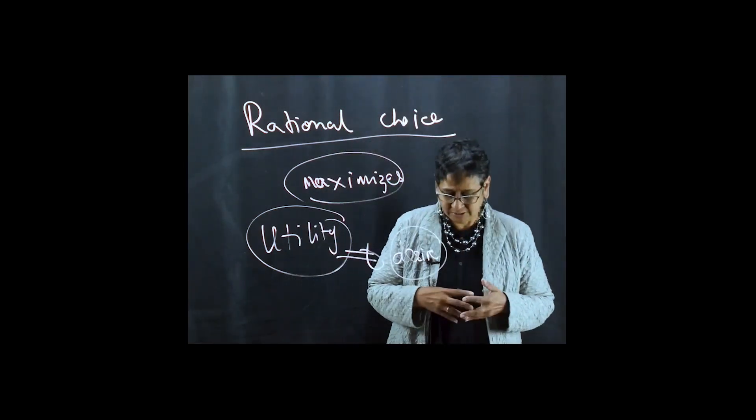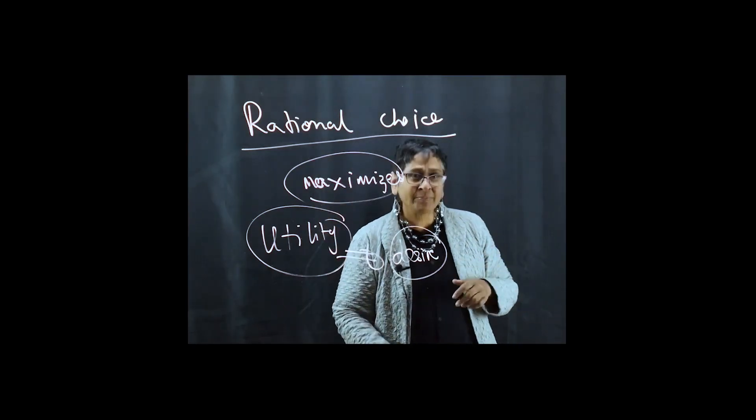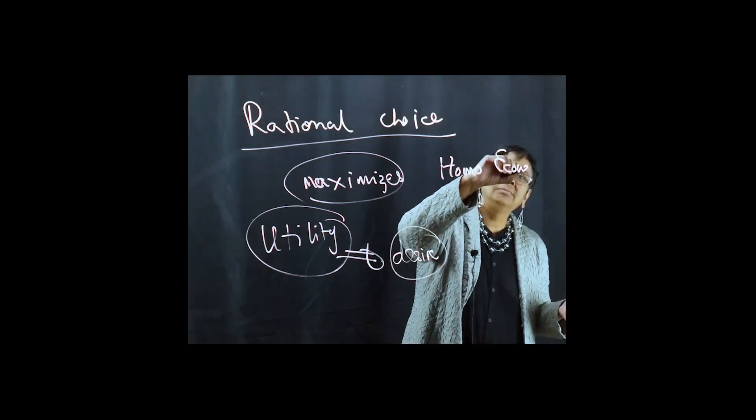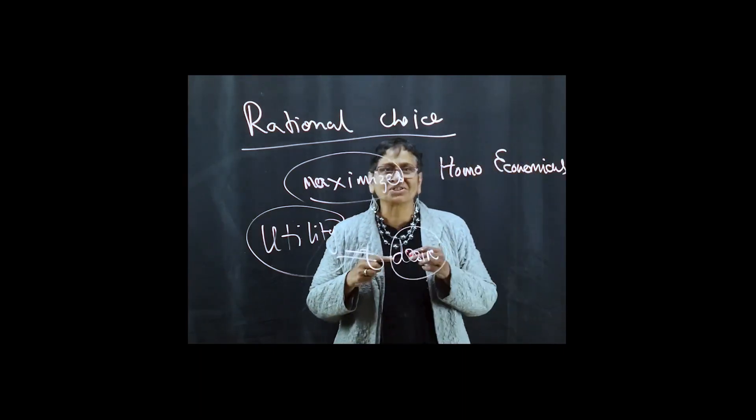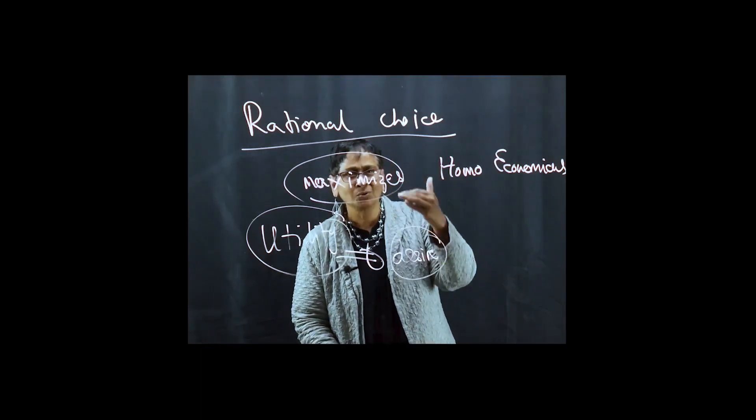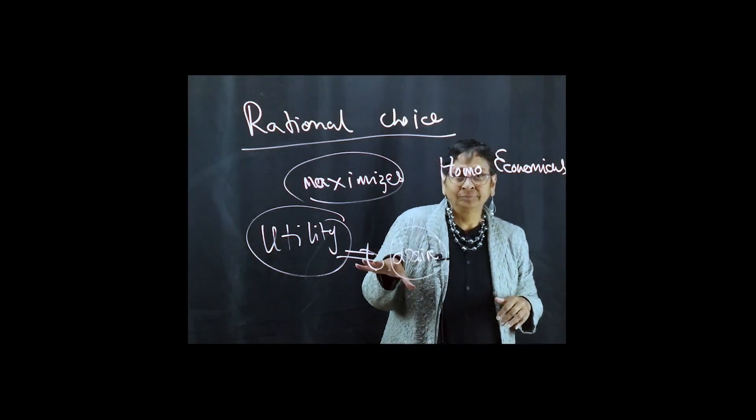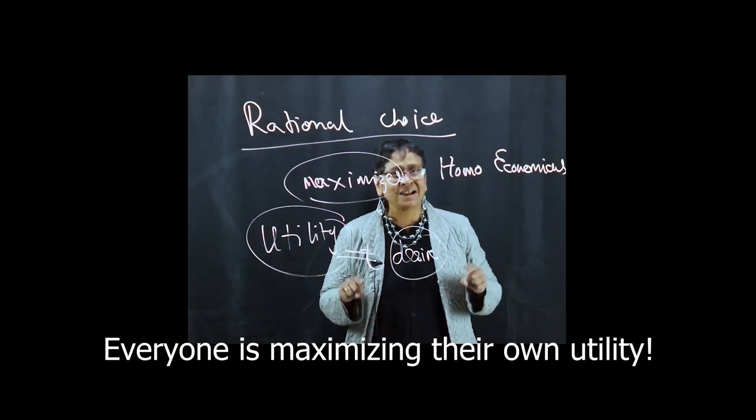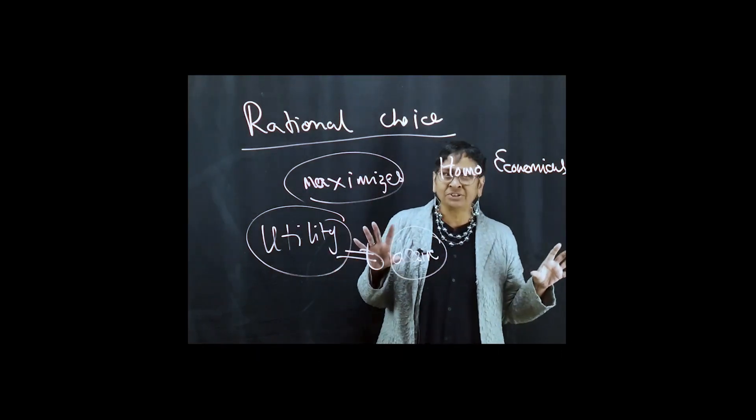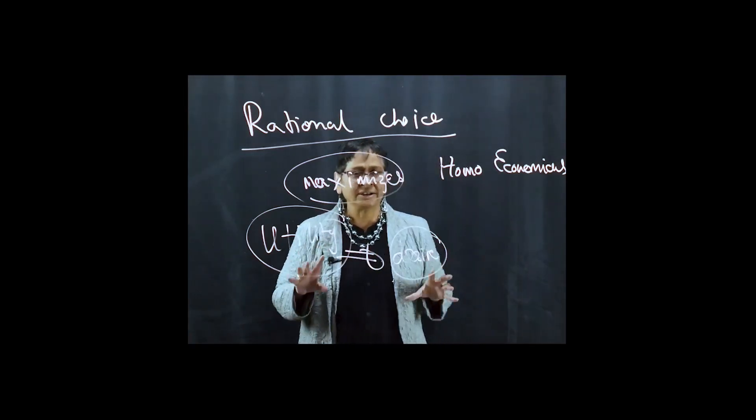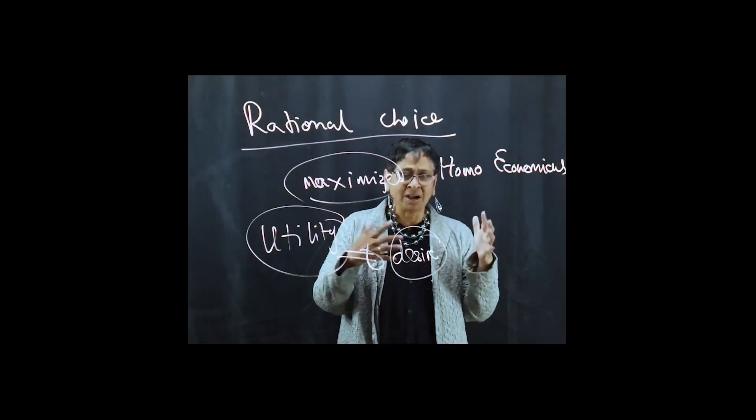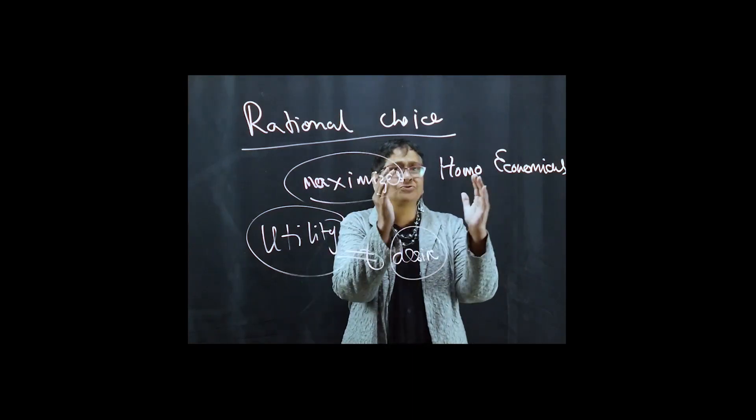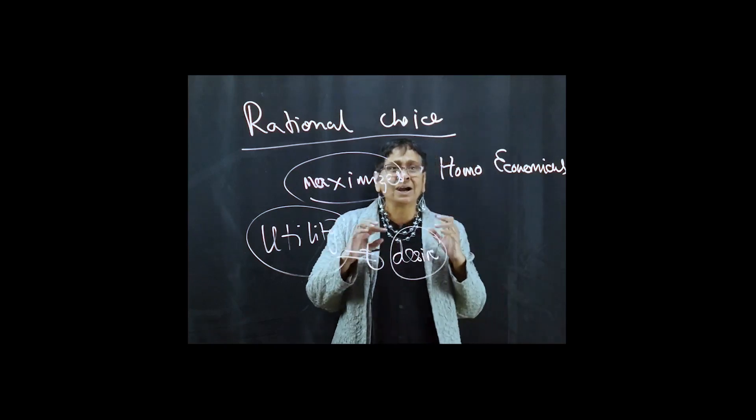So the issue really has to do with how we understand utility as a form of desire and how we understand human psyche in relation to how people make choices. Sometimes this model is called rational man. Sometimes people call him homo economicus, the economic man, the guy who makes choices that are rational based on utility. Remember that everyone is out for themselves. Everyone is basically maximizing their own utility subject to their resources.